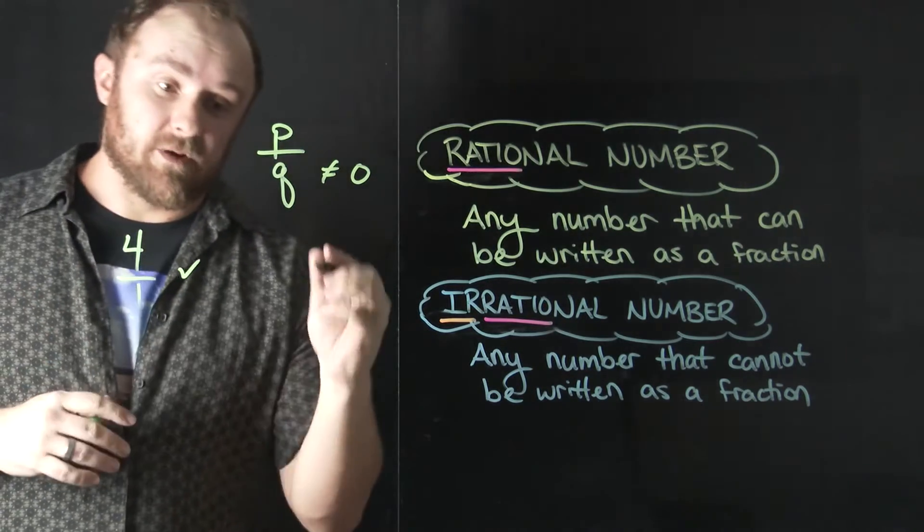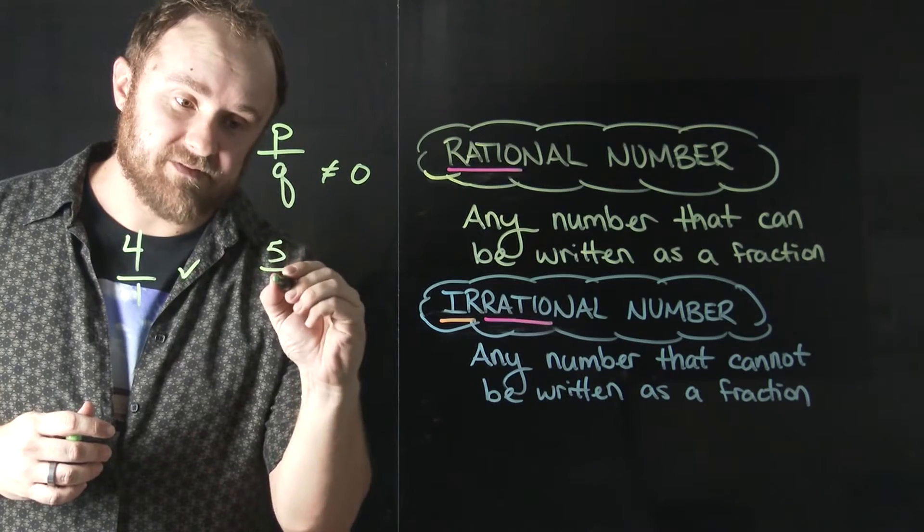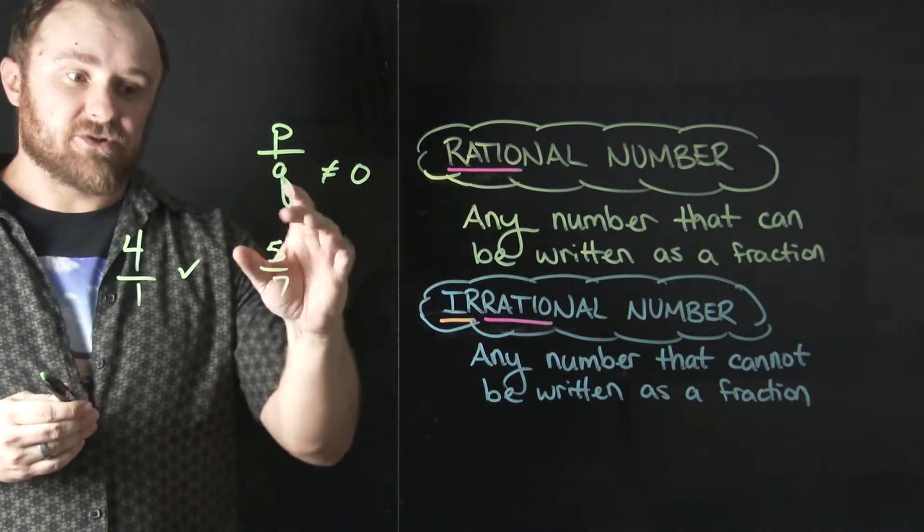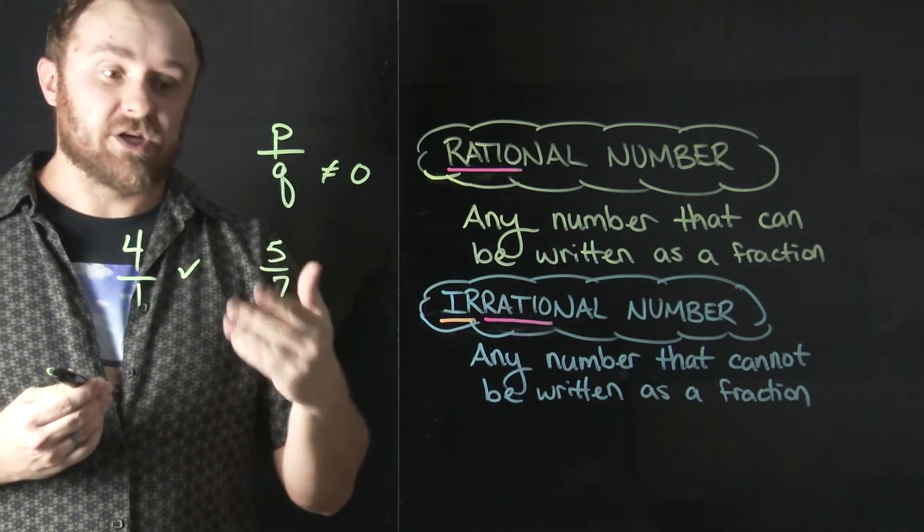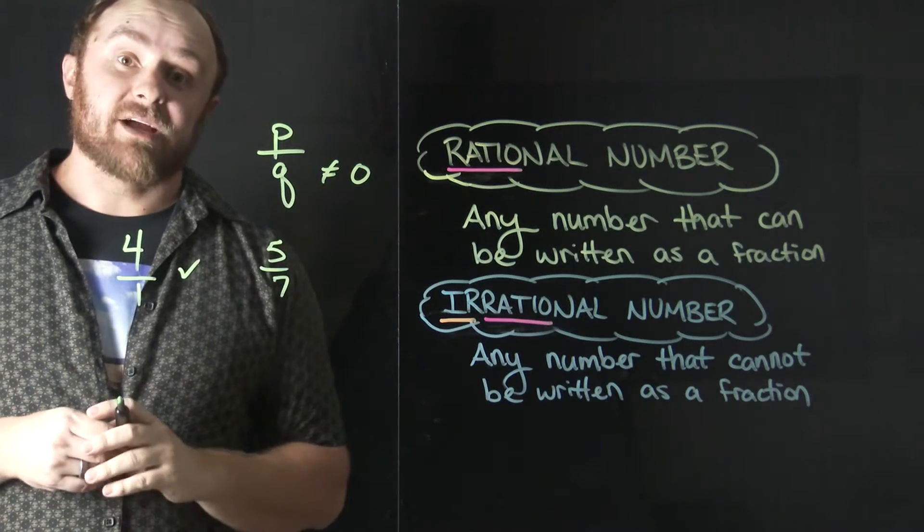Obviously, anything in fractional form is rational. So if I have the fraction five-sevenths, for example, that's rational because it's already written as a ratio. So all fractions are rational as well.